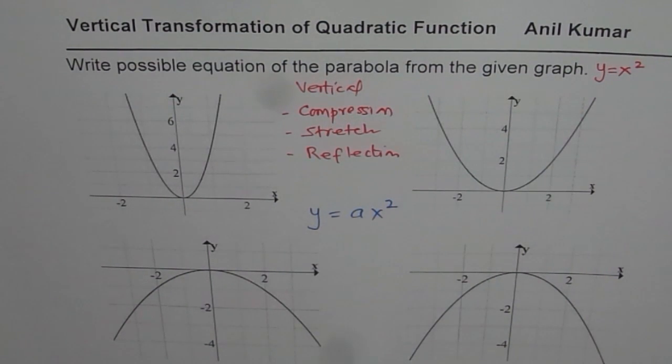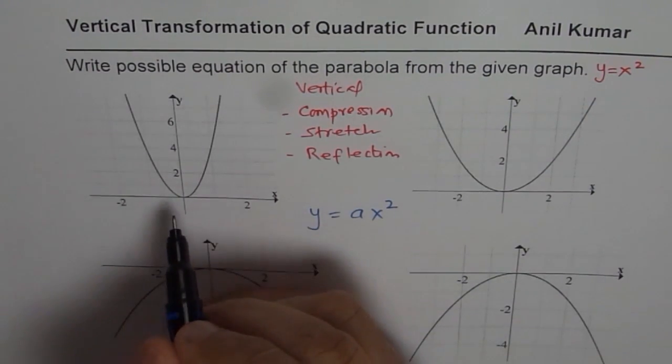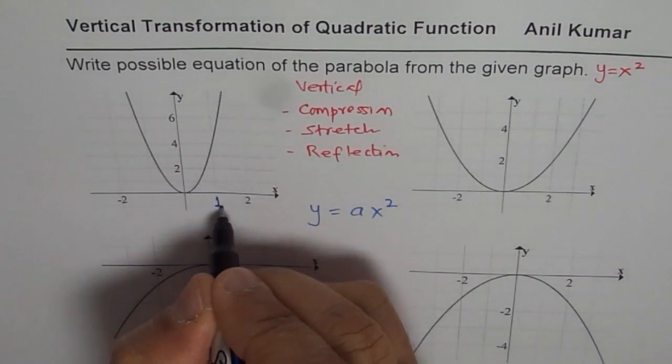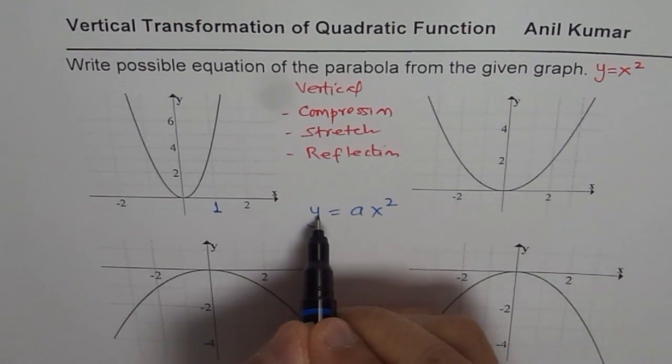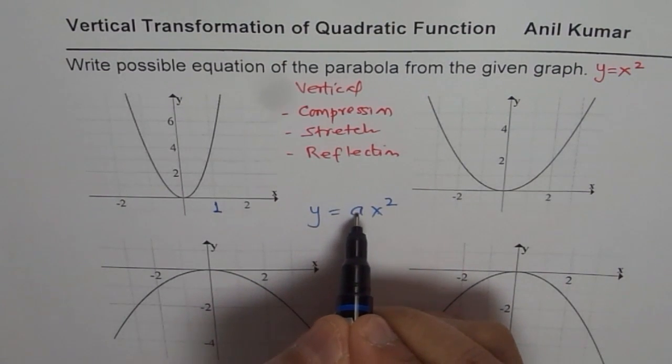Now, let us see how to find equation from the graph. The idea is to select a good point. Normally, look at 1. If x is 1, then y value is same as a. That is the trick.